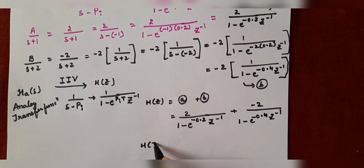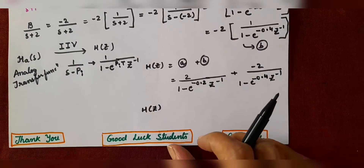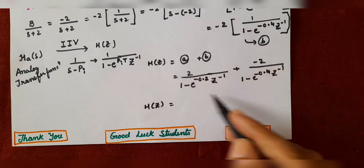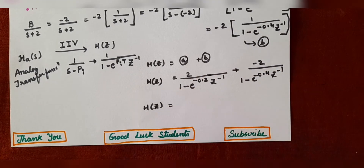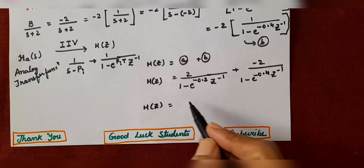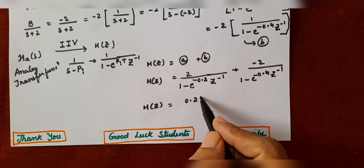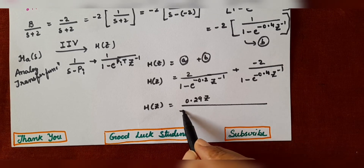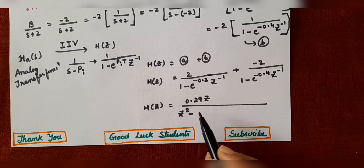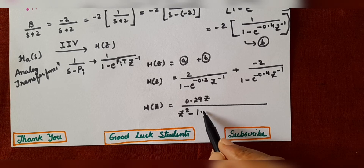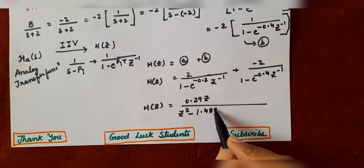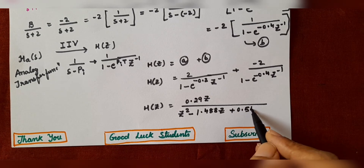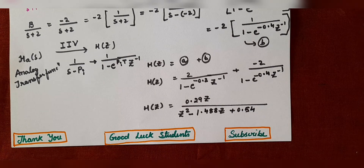On simplifying, H(z) = 2.29z / (z² - 1.488z + 0.54). I hope you have understood the solution.